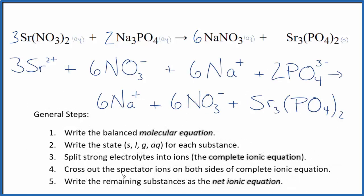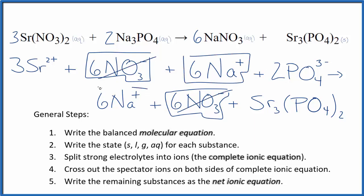Now we can cross out the spectator ions on both sides of the complete ionic equation. In the reactants here, I see six nitrate ions. I also see six nitrate ions here in the products. These are spectator ions. We're gonna cross these out. Six sodium ions in the reactants and six in the products. Spectator ions, we cross them out.